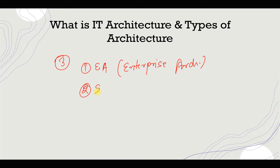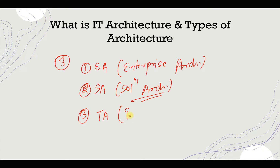The second type is solution architecture, which mainly talks about the functionalities of any specific system your organization is using. The third type is technology architecture, which mainly talks about the various types of technology components we use to fulfill our requirements.